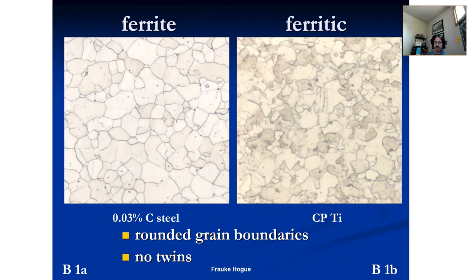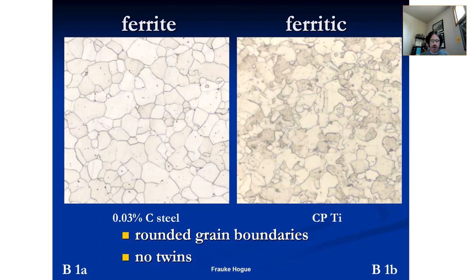Here's where it gets really important. Ferrite is a phase you find in the iron-carbon phase diagram. If we have a microstructure that's 'ferritic,' that means it looks like ferrite but we're seeing it in another material system. That's the difference between ferrite and ferritic. This example shows commercially pure (CP) titanium — alpha titanium. We see a similar structure: rounded grain boundaries and no twins, though there's a little difference in contrast between the steel-based and titanium-based micrographs.